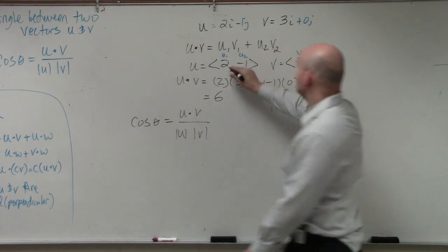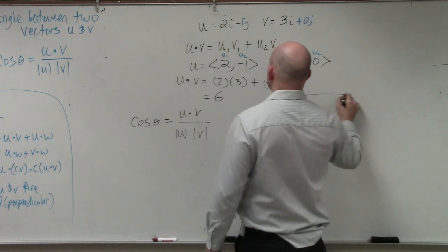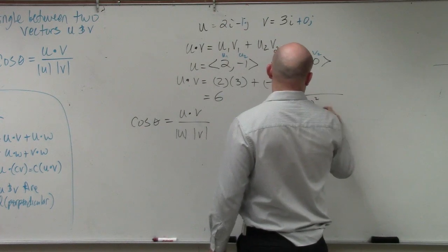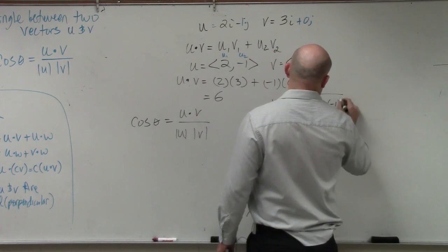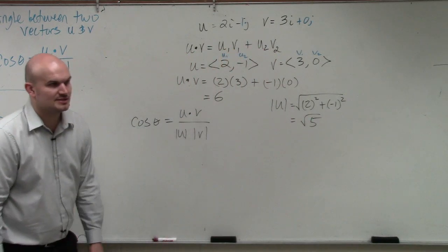So the magnitude of u is going to be the square root of u1 squared plus u2 squared. Everybody agree with my answer there?